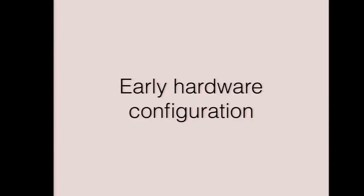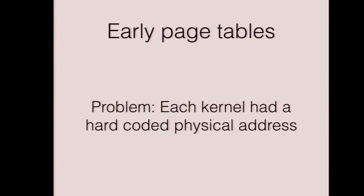When booting the kernel, you've got U-Boot as a first-level bootloader, which then runs the U-Boot loader (ubldr), and then it jumps into the kernel. At that point we're still running in physical addressing. We have this problem where the kernel has a hard-coded physical address it expects to be loaded at. That's fine if you're running one kernel on one piece of hardware and can guarantee you're always loading at a fixed address.